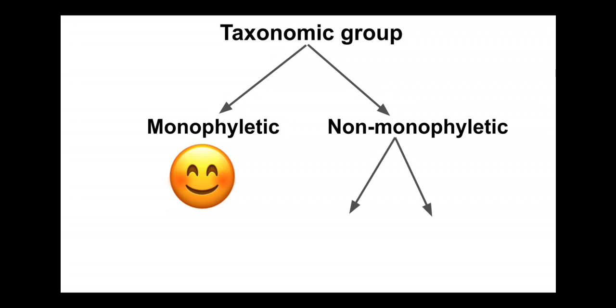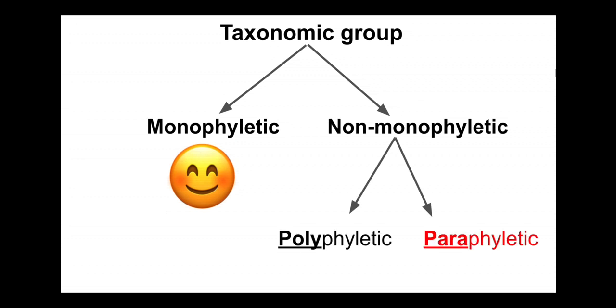There are at least two commonly recognized types of non-monophyletic groups: polyphyletic and paraphyletic.